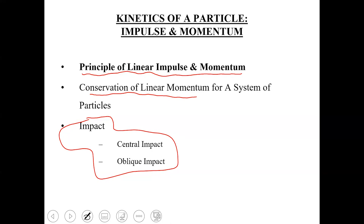The third method is the impulse and momentum method. Impulse is a vector quantity and momentum is also a vector quantity, so you cannot apply this principle between two positions. Rather, similar to force-acceleration, you need to apply the impulse and momentum principle along some axis in a coordinate system. It is again a vector principle, so you apply it along the axis, not between two positions.